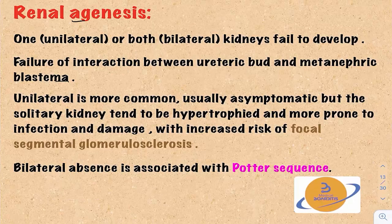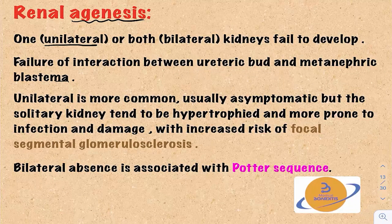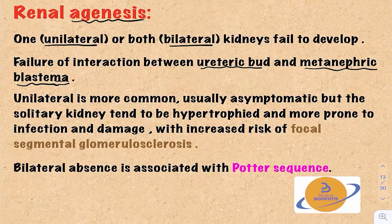The first abnormality is called renal agenesis, which means failure of the development of the adult kidney. This can be unilateral, affecting one kidney, or bilateral, affecting both kidneys. This is caused by the failure of interaction between the ureteric bud and the metanephric blastema. These two structures must interact with each other and stimulate the growth of each other.